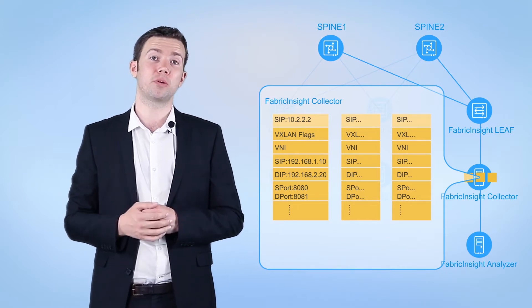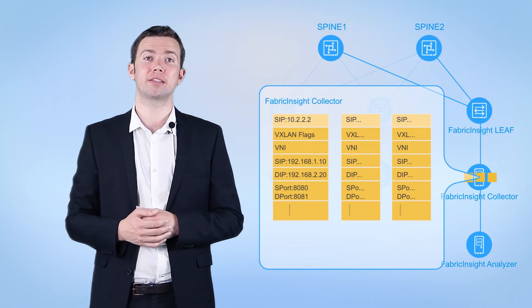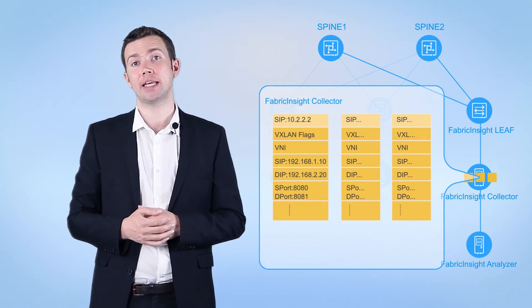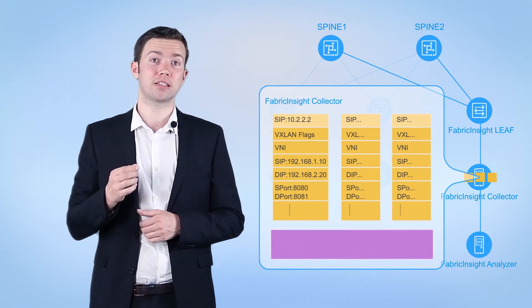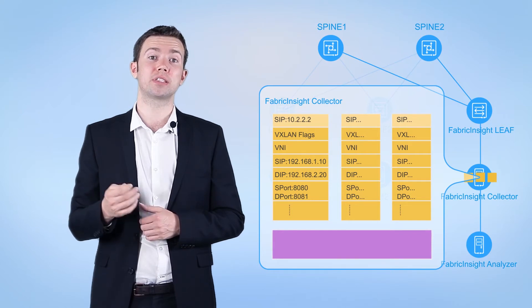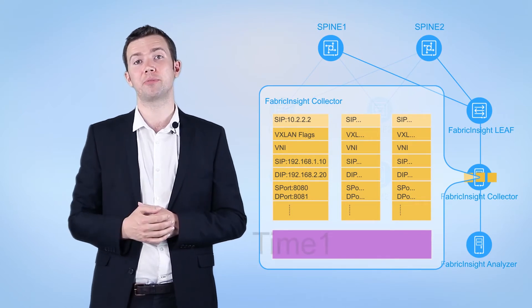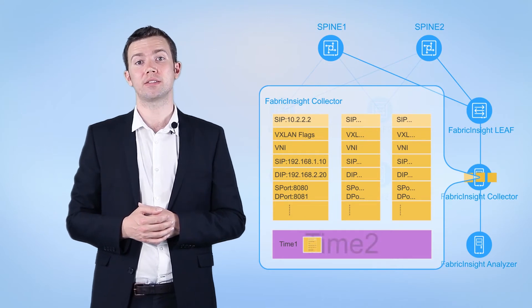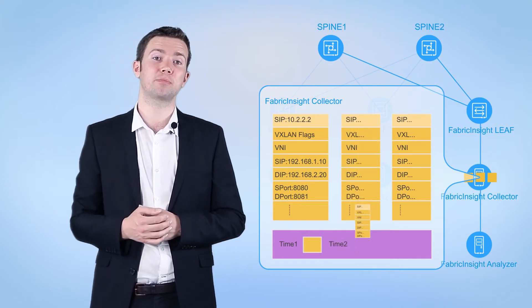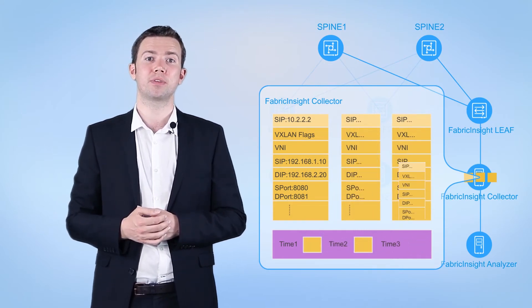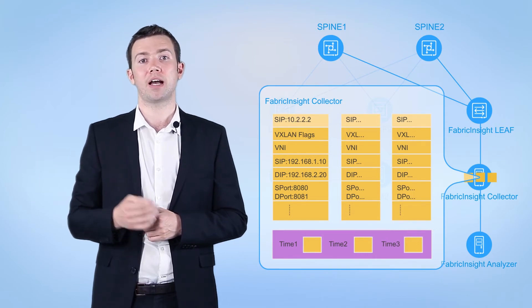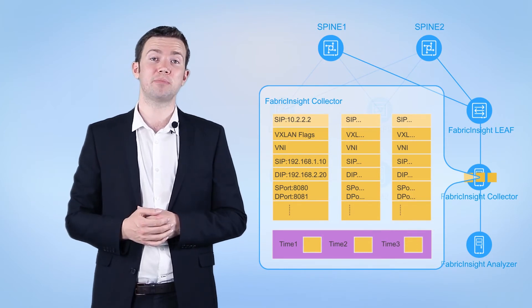The collector performs the following operations on the mirrored packet based on DPDK. Firstly, it adds a timestamp, which records the time when the collector receives the mirrored packet. Then, it parses the packet, which involves obtaining the ER-SPAN source IP address, VXLAN header, IP header, and TCP packet header.